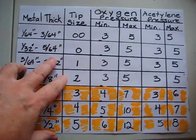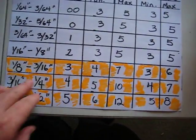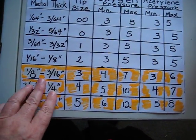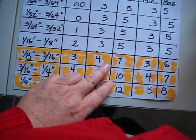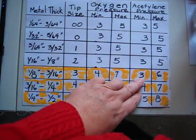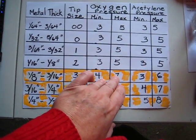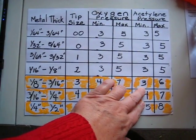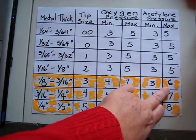And then it just keeps going on up, stays at 3 and 5, and then when you get up to an eighth thickness, it goes up to 4 and 7 and 3 and 6 on the pressures. The oxygen is, the minimum is 4, and the maximum is 7, the minimum is 3, and the maximum is 6 on the acetylene.